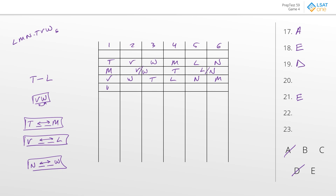Could W go in year one? If so, V must go next to it in year two. V and L must be two apart, so L goes into five. T must be before L, and T and M must be two apart — the only way to make that work is T in three and M in six, with N in four. That works perfectly, confirming W can go into year one. This eliminates B and C, leaving E as the best answer.